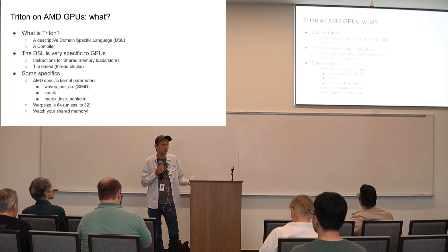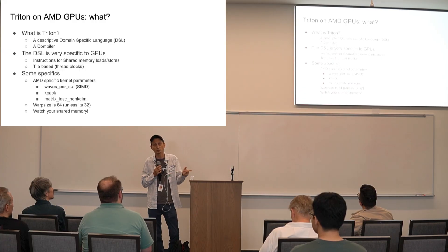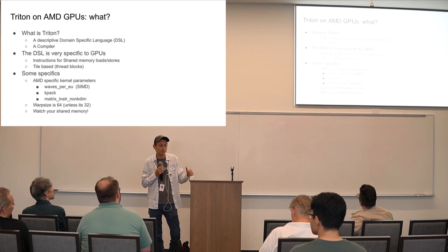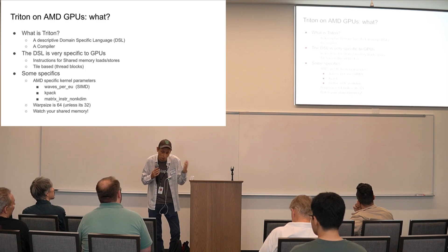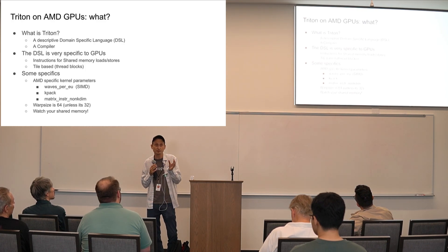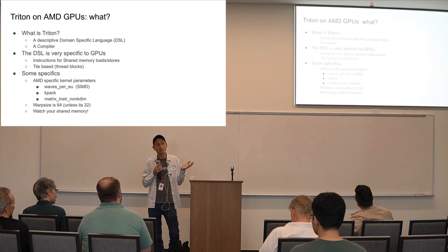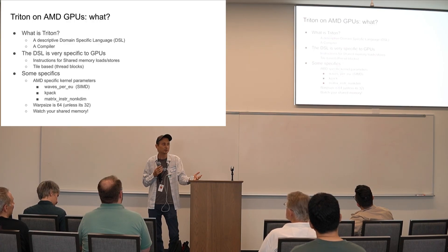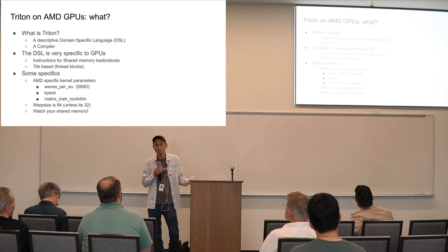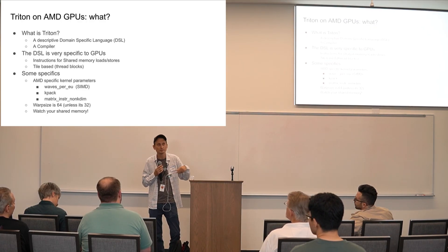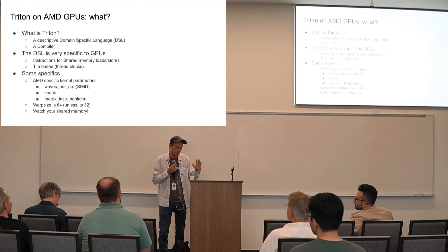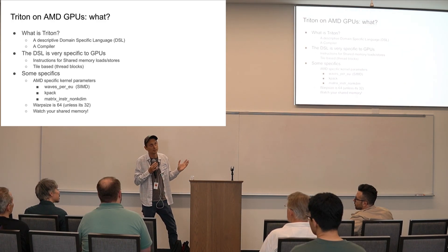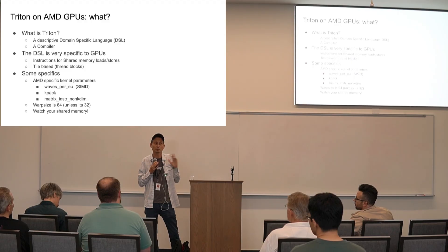The DSL is specific to GPUs. We were talking about SRAM earlier — our GPUs have shared memory as well, and Triton gives you direct control of how to use it. It's a limited resource: if you design a kernel that uses too much, it won't compile. But you have the power to control every last bit of shared memory and fuse as much as you can until you run out. Other AI hardware may not have shared memory, which limits portability somewhat, but the DSL fits GPUs really well.